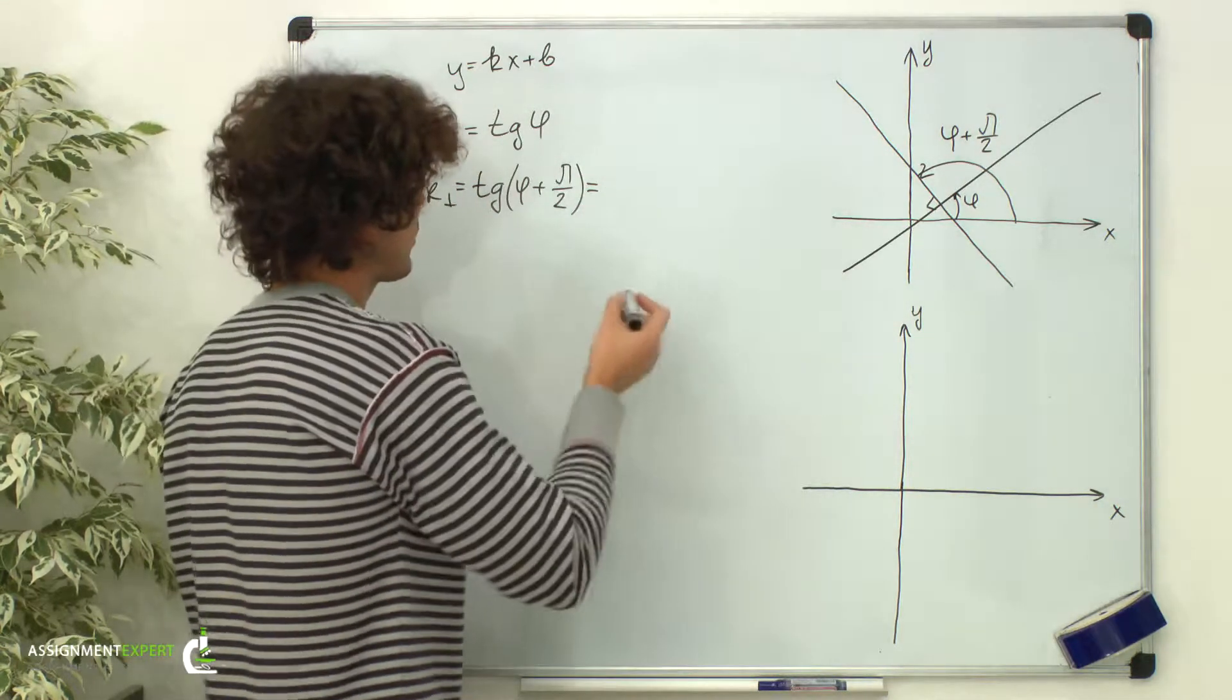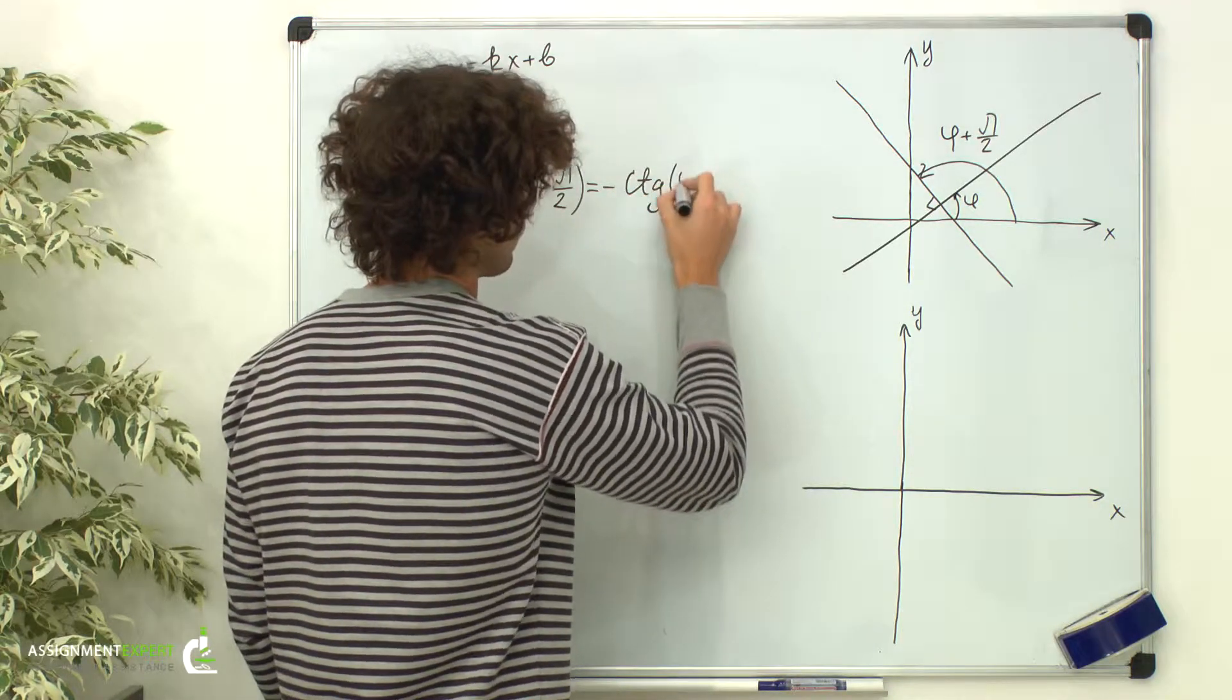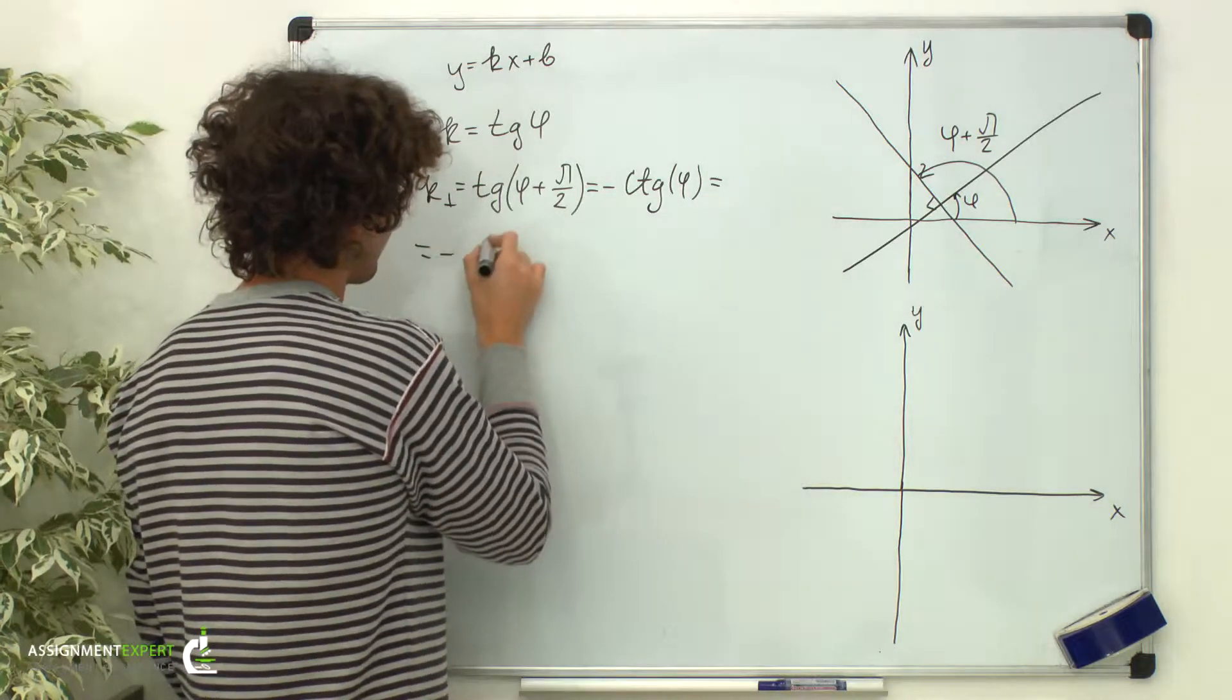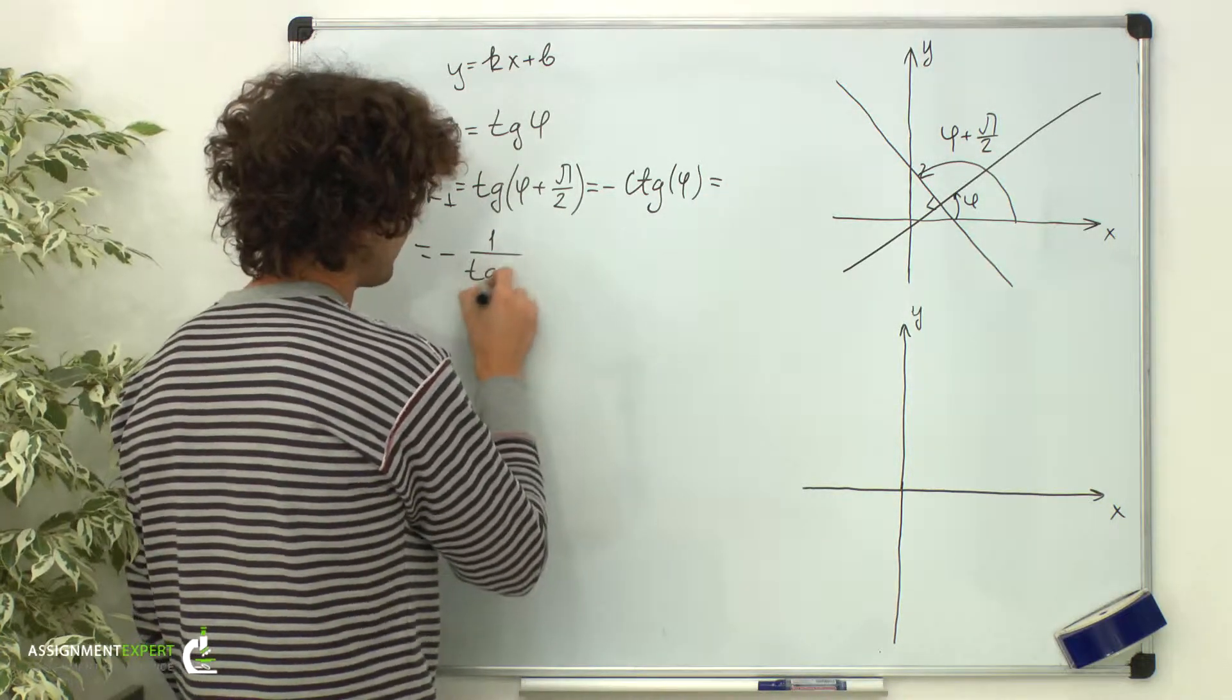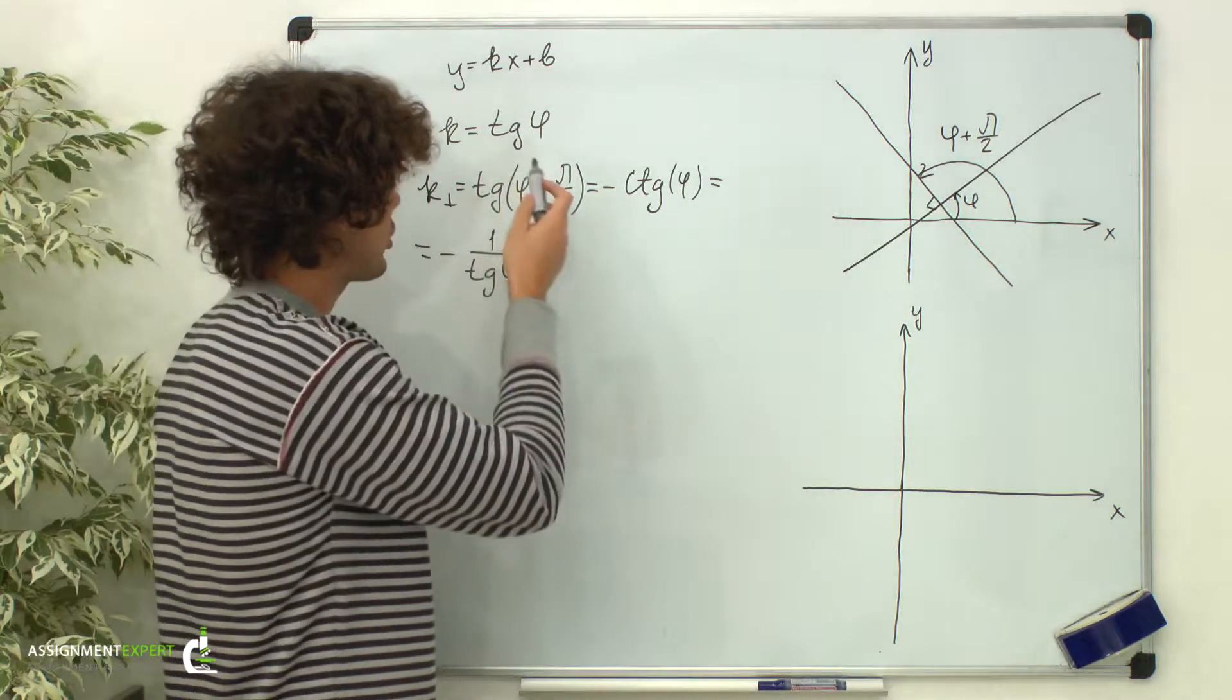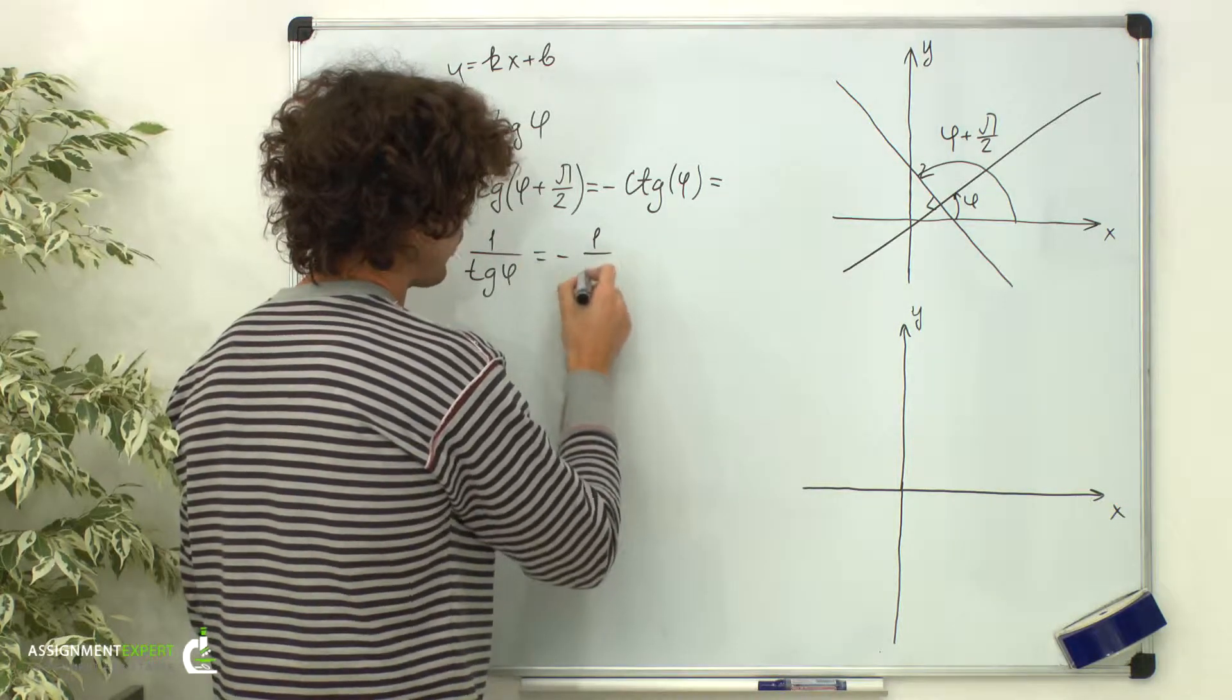Using trigonometrics, this gives us negative cotangent of phi, which is also equal to negative 1 over the tangent of phi. And as we know, the slope of the initial line equals the tangent of phi. So, this gives us negative 1 over k.